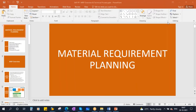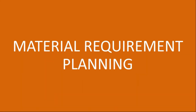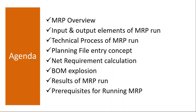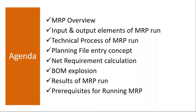We'll be starting our next topic, that is MRP — Material Requirement Planning. The topics we are going to cover: what is MRP, MRP overview, input and output elements of MRP run, technical process of MRP run, planning file entry concept, net requirement calculation, BOM explosion, results of the MRP run, and prerequisites for running MRP. These are the topics we'll be covering in the MRP overview.